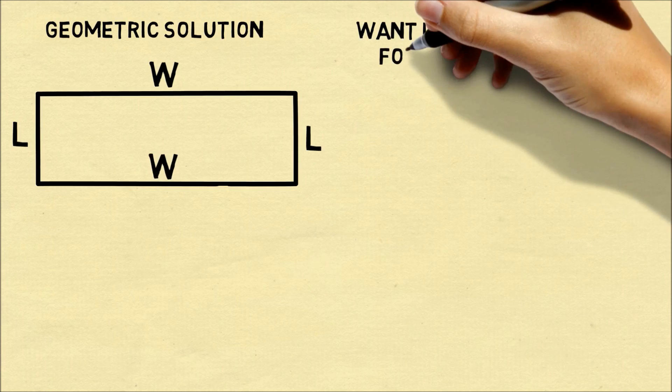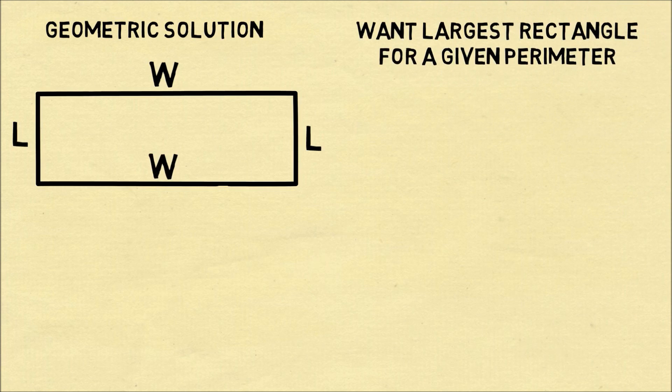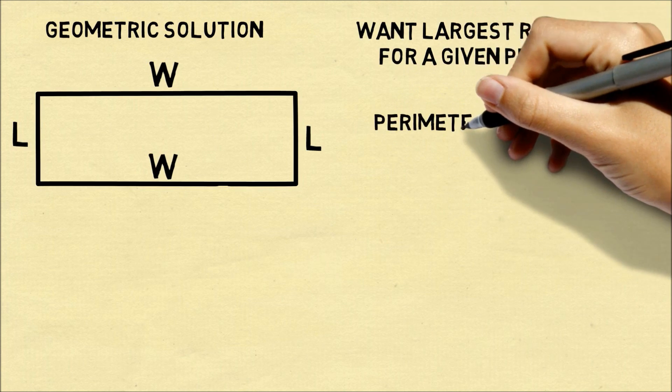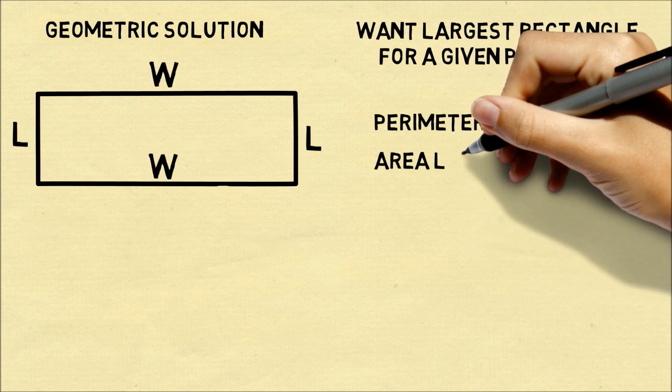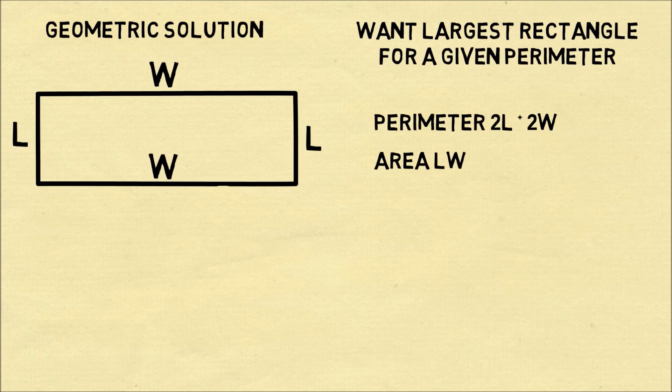So let's think about instead of having the river let's just think about a rectangle and we want to solve the problem what's the largest rectangle for a given perimeter. The perimeter of a rectangle is 2 times the length plus 2 times the width and the area is the length times the width.